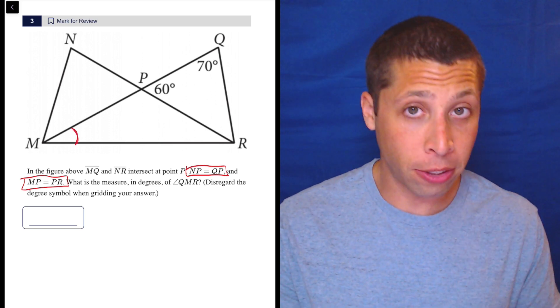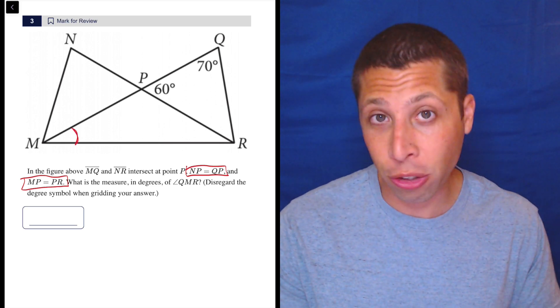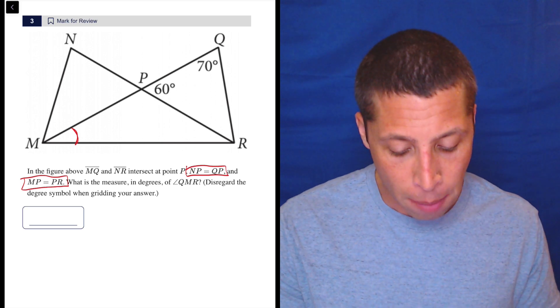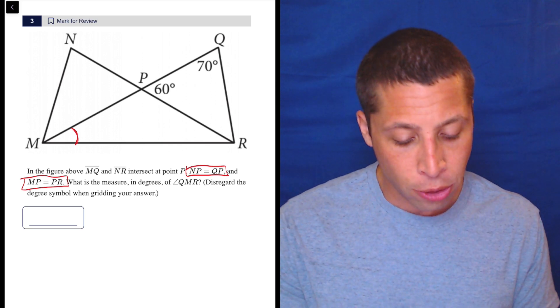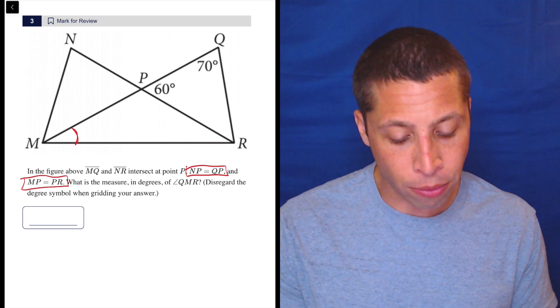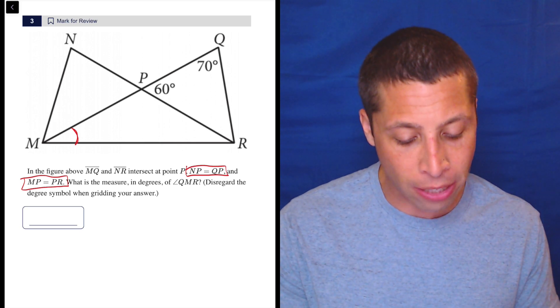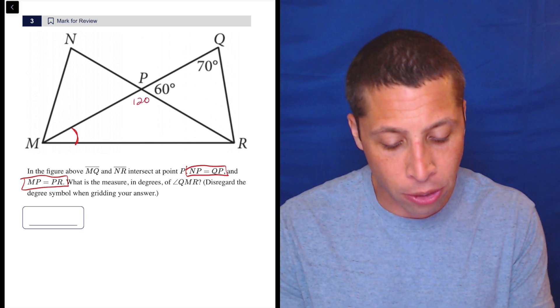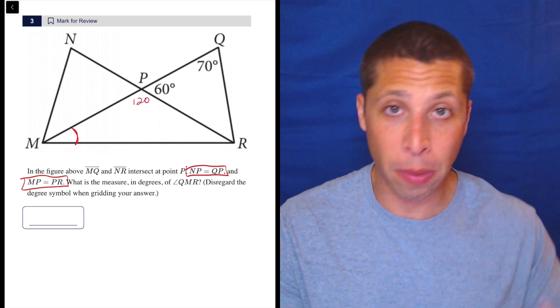You're probably going to need to draw this on your own scratch paper, but I'm going to just use the picture here because I can and it's easier. So I need to work my way into this triangle. And right away, if these two lines NR and QM intersect, then that means this has got to be 120 degrees because that's a supplementary angle.